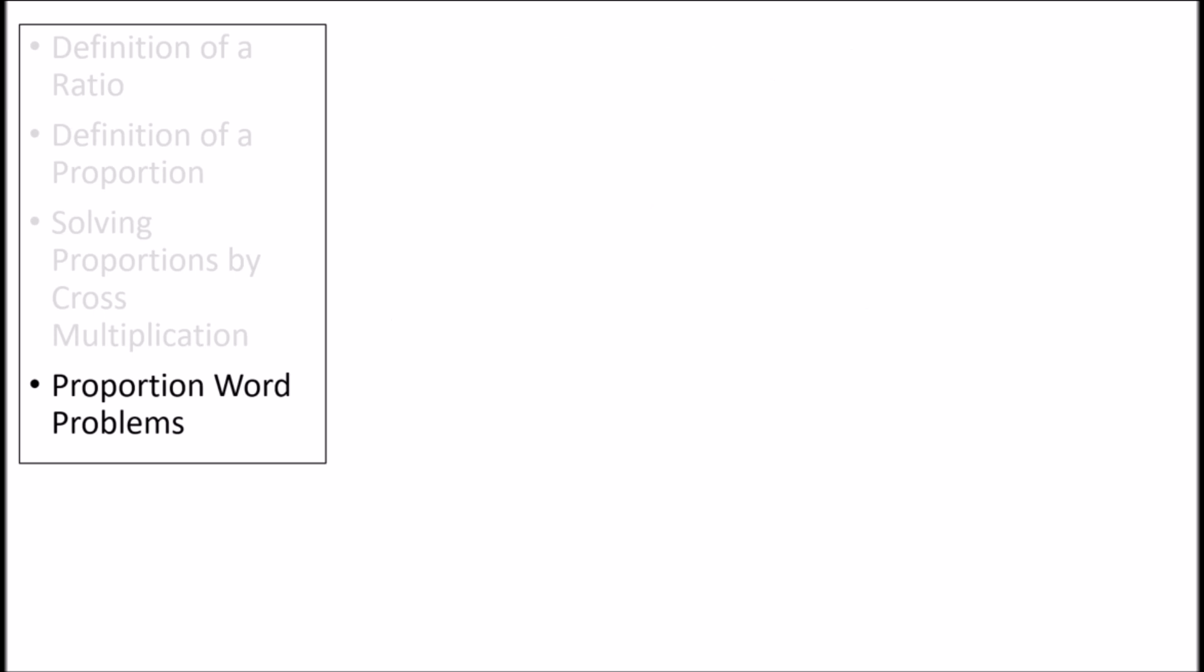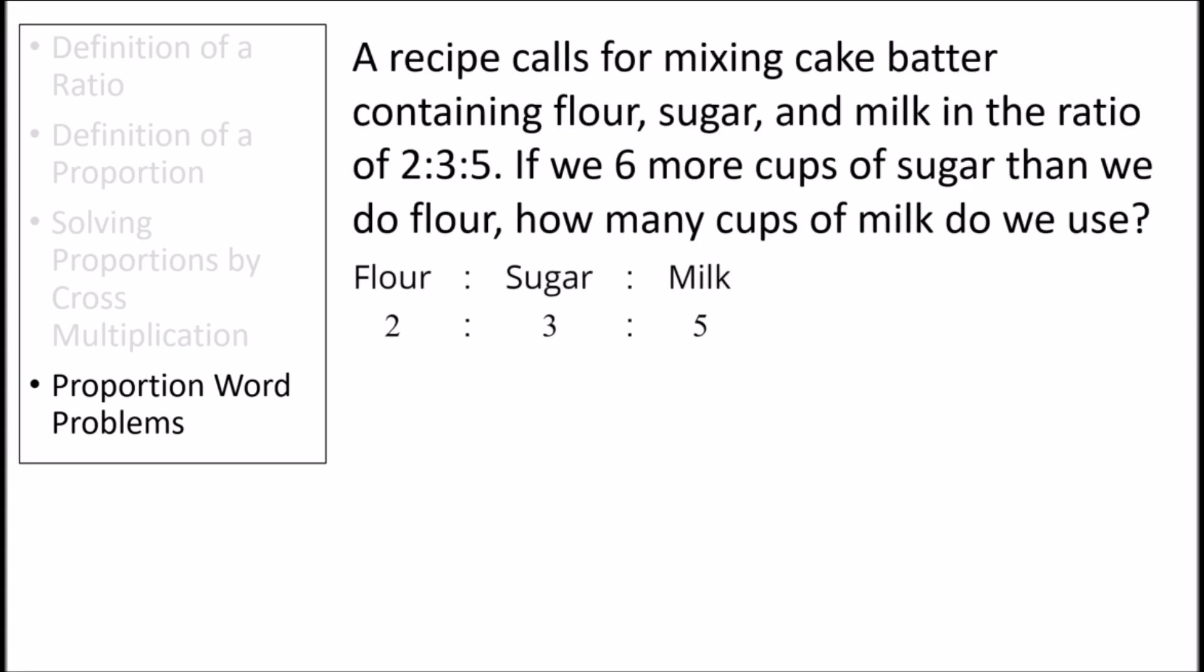Let's try another word problem now. Once again, we will have a recipe for cake batter that has flour, sugar, and milk in the ratio of 2 to 3 to 5. We can also introduce a variable x. So here we have the amount of flour is 2x cups, amount of sugar is 3x cups, and the amount of milk 5x cups.